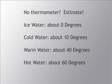For instance, cold water is about 10 degrees, warm water is about 40, ice cold water is close to zero, and hot water is about 60, and this is all degrees Celsius.